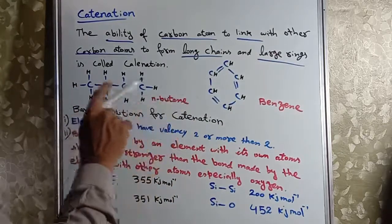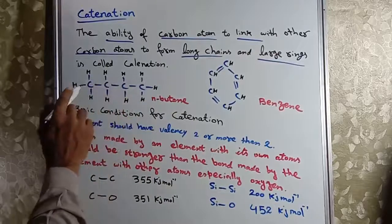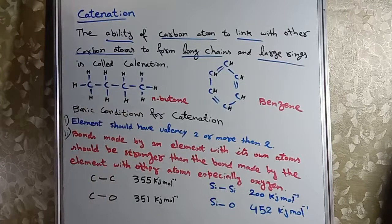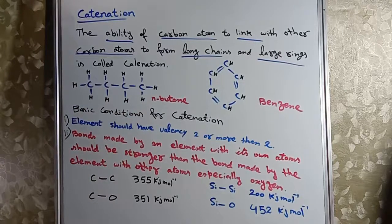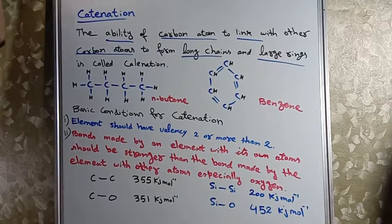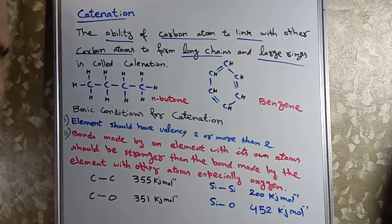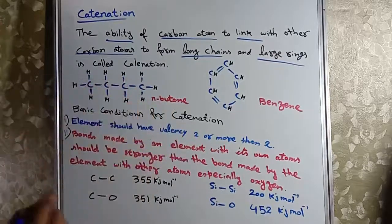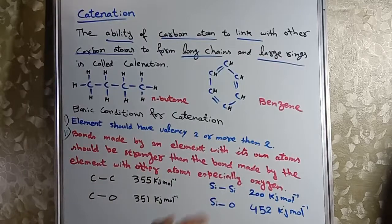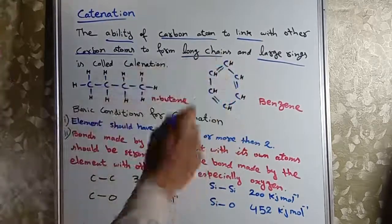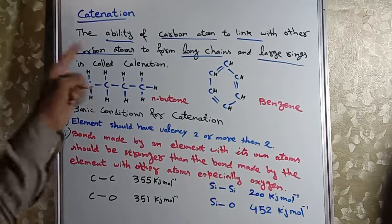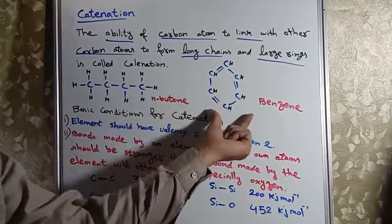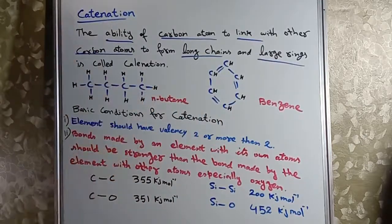For example, normal butane mein carbon carbon aapse attach ho rahi hai. Carbon se bond, carbon se bond, carbon se bond. The ability of carbon atom to link with other carbon atom - yeh apne jaise doosre carbon atom ke saath link bana leti hai. This is straight chain. Aur yeh maine benzene ka structure banaya, yahaan carbon carbon ne large rings bana li hain.